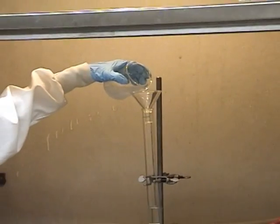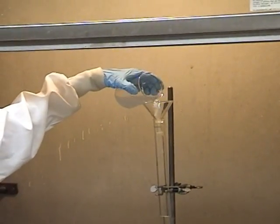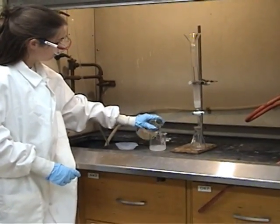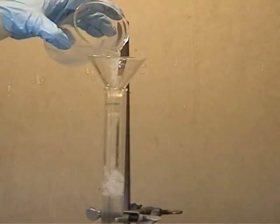Using a powder funnel, pour as much as possible of the slurry into the column. Now add more solvent to the beaker, once again stir the solution and pour it into the column.